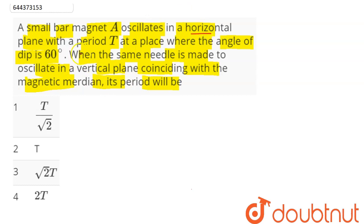When it is vibrating in horizontal plane, the time period T is given as 2π√(I/m·Bh), where Bh is the horizontal component of Earth's magnetic field.